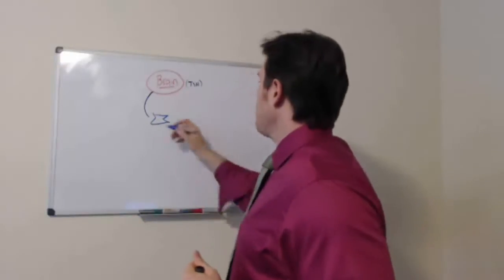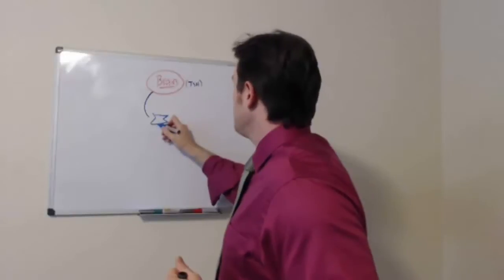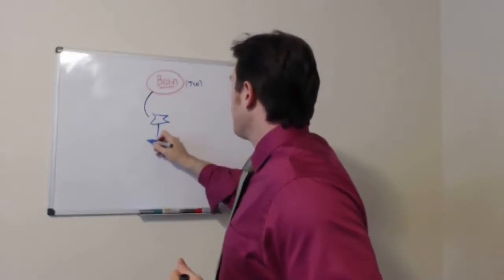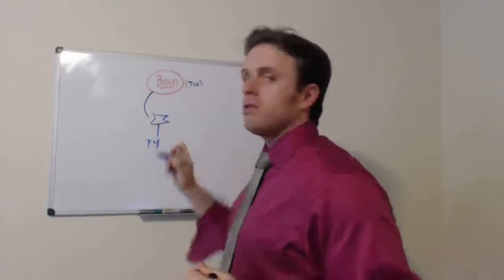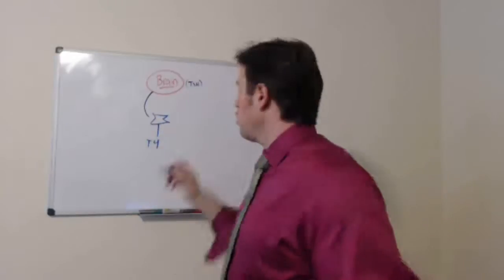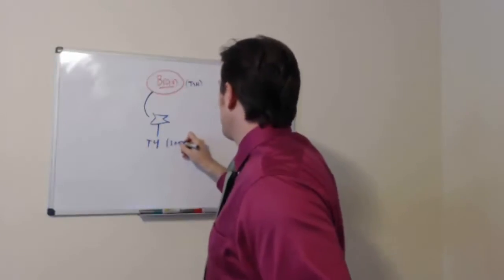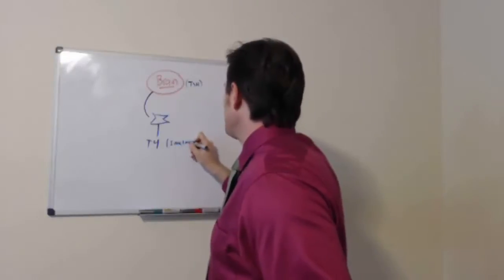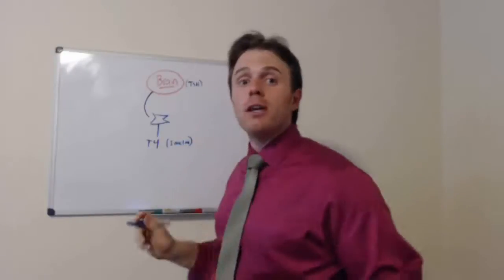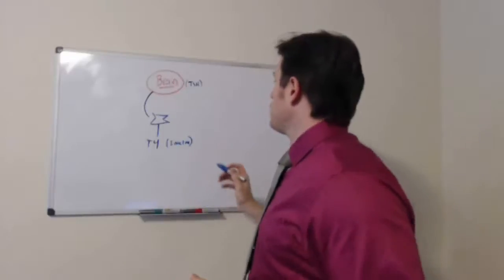And what the thyroid does from there is the thyroid spits out some T4. So T4 is known as thyroxin or inactive thyroid hormone. It's actually not active. It has to get converted to become active.